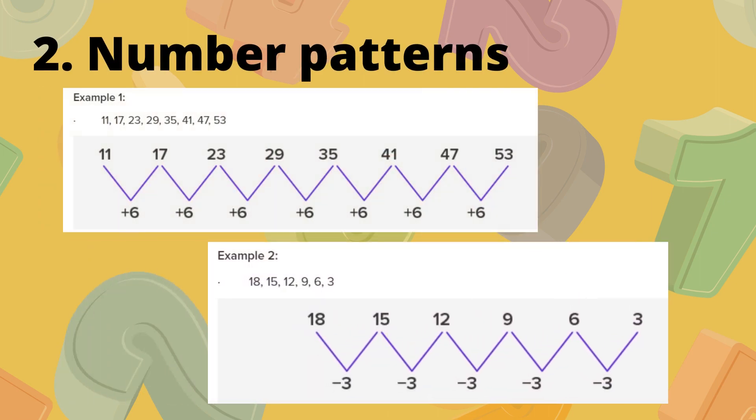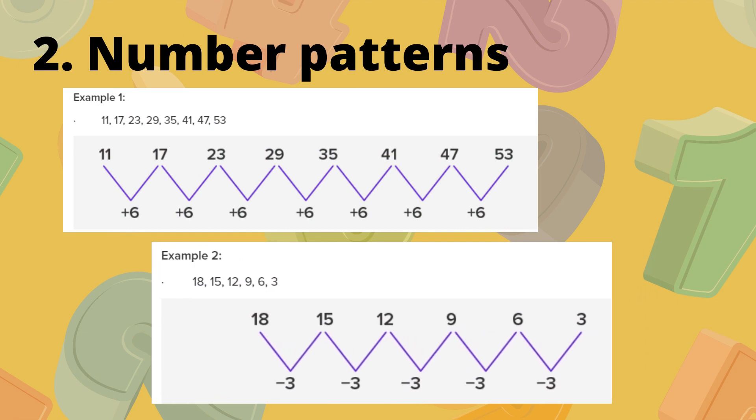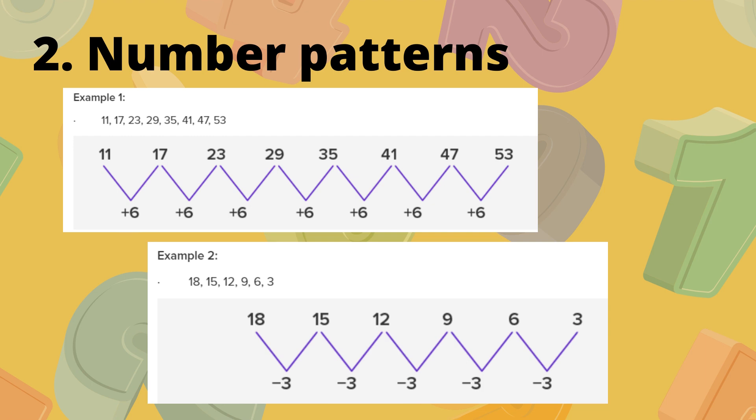As you can see in the first example, 11, 17, 23, 29, 35, 41, 47, and 53. So, when you are going to compute the sequence, there is a difference of 6 in each series of numbers. You have from 11, you need to add 6 to make it 17 and then 17 plus 6 to make it 23 and so on and so forth.